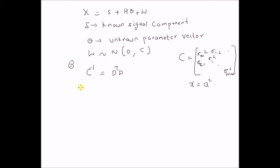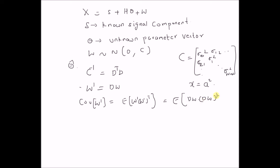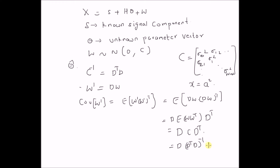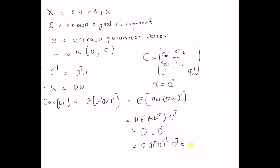For example, the whitened noise is W' = D W, and the covariance of W' equals E[W' W'^T] = E[D W (D W)^T] = D · E[W W^T] · D^T = D · C · D^T. Since C⁻¹ = D^T D, this becomes D · (D^T D)⁻¹ · D^T = D · D⁻¹ · D^{-T} · D^T, which is clearly equal to the identity matrix I.